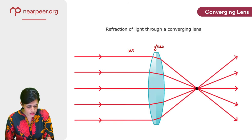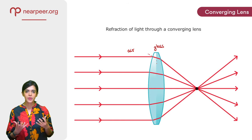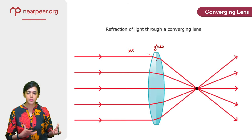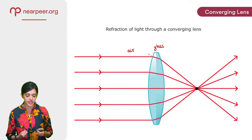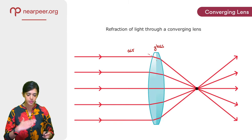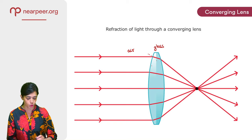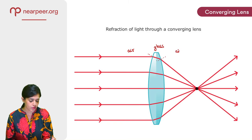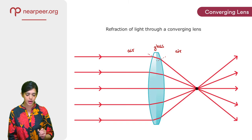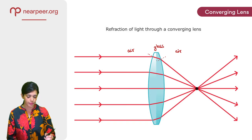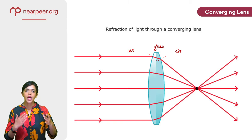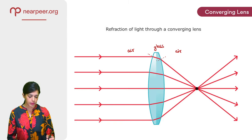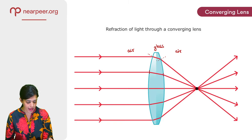So over here on this boundary, refraction will take place on this interface. So light is basically entering a denser medium. Initially it was in a rarer medium. Hence it will bend towards the normal and that is exactly what is happening over here. When light leaves this lens, it is going from a denser to a rarer medium. So it's going from glass into air and hence it will bend away from the normal. The same happens over here, over here and over here.